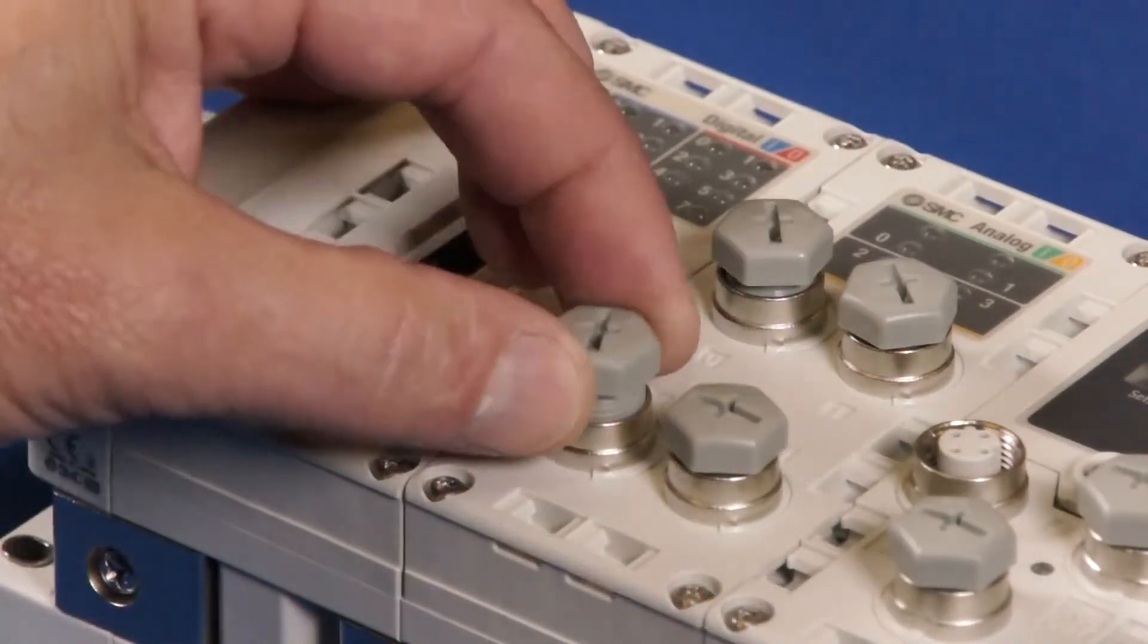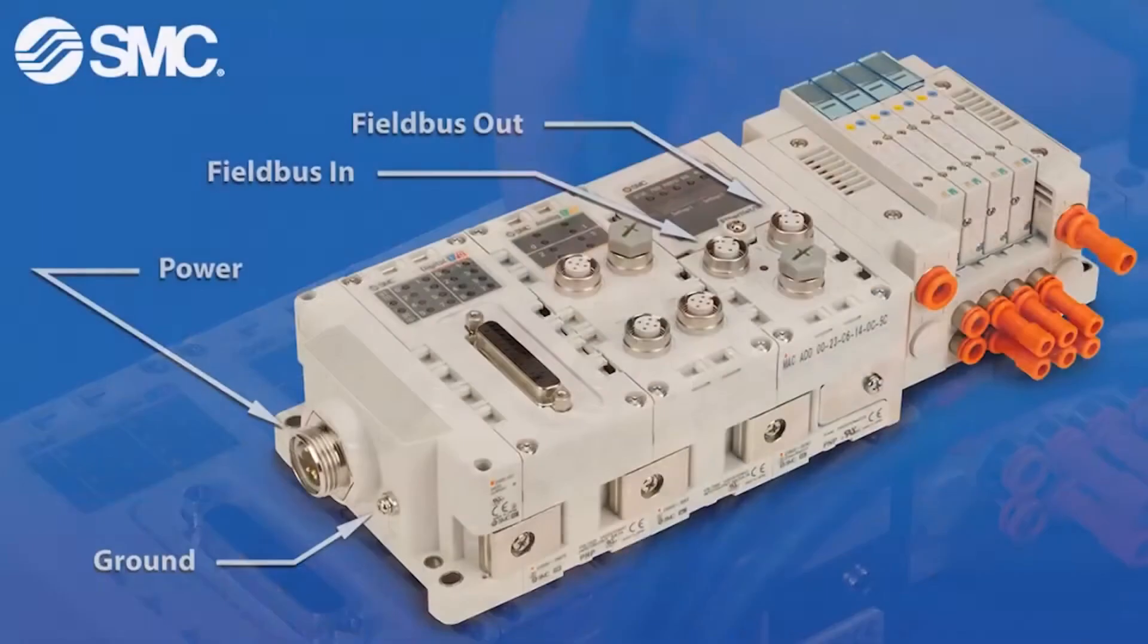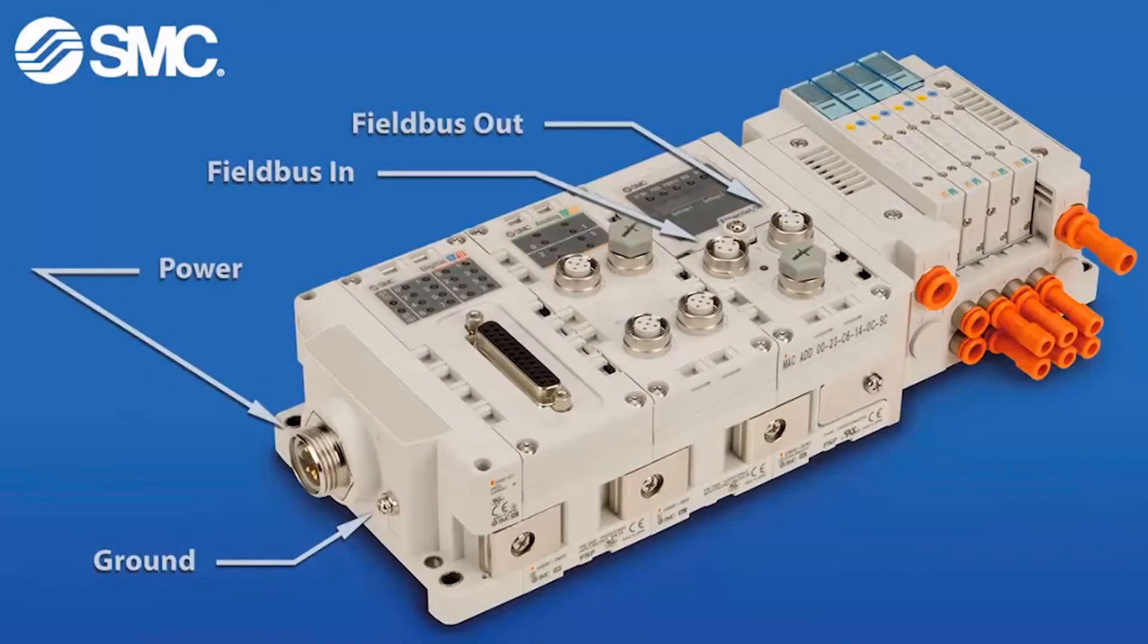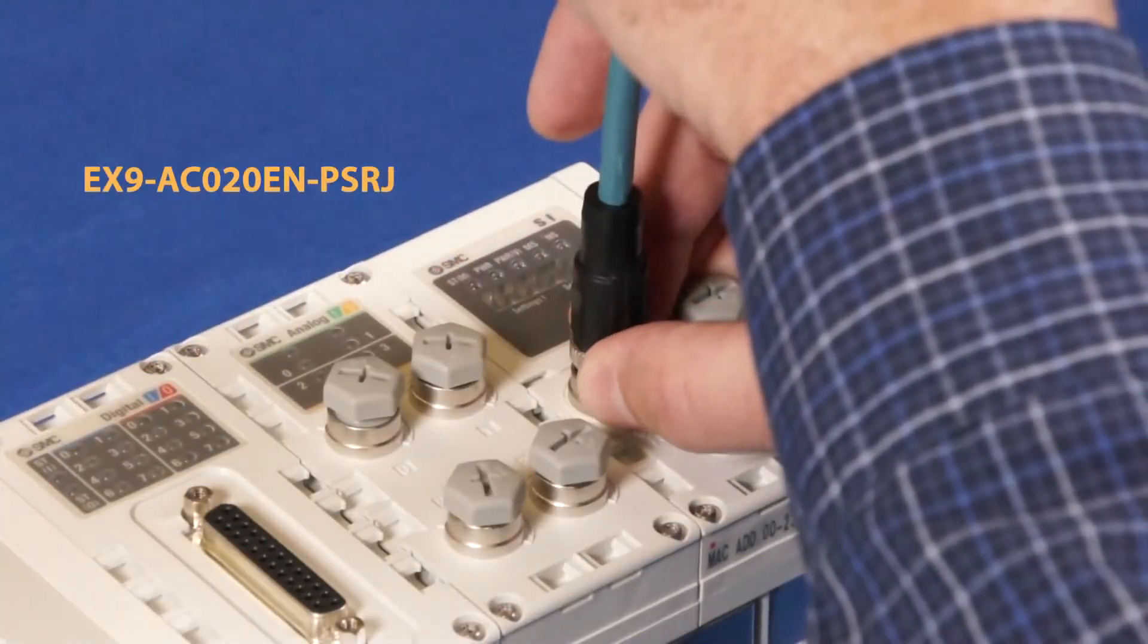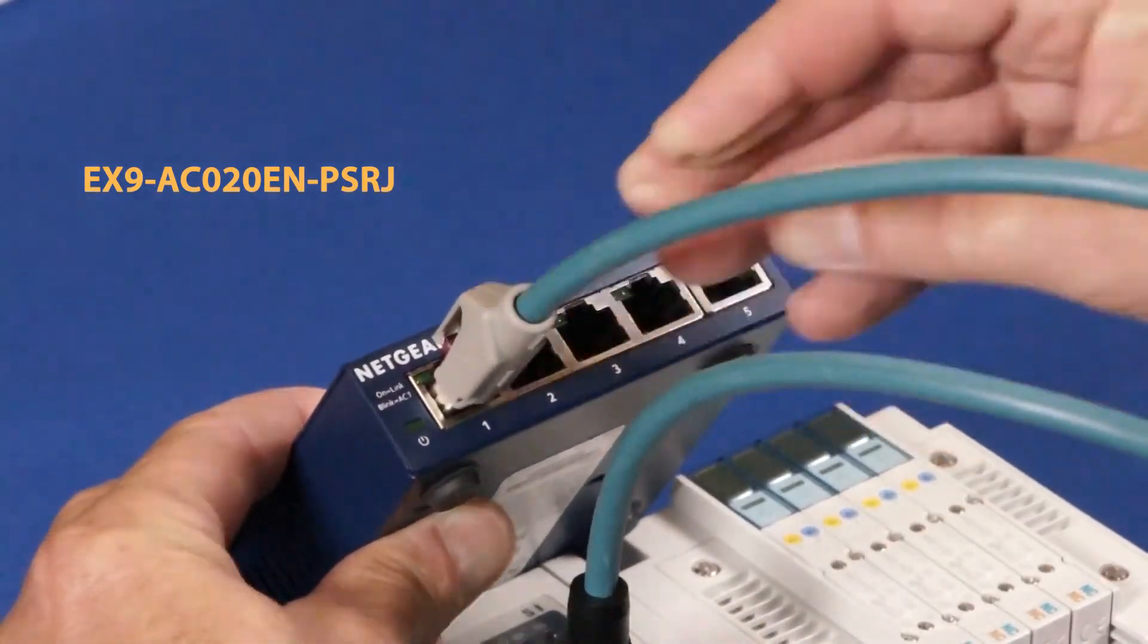Plug all the unused M12 I.O. ports to assure its IP rating. Now, make the field bus cable connection. Use the upper left M12 port. The RJ45 connector on the other end connects to the switch.